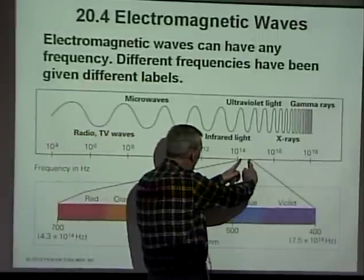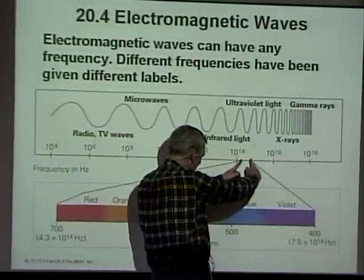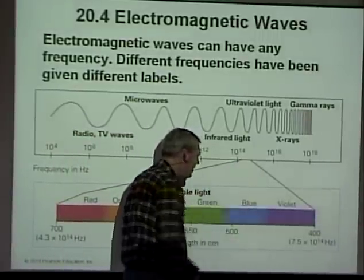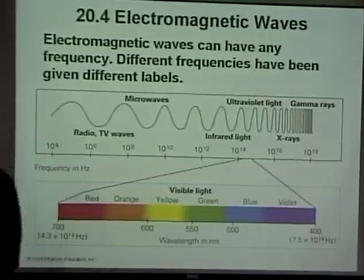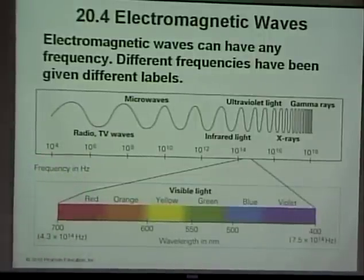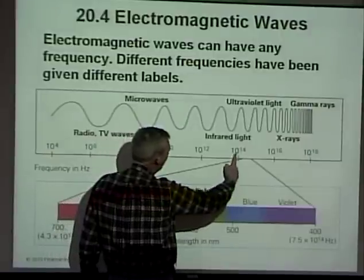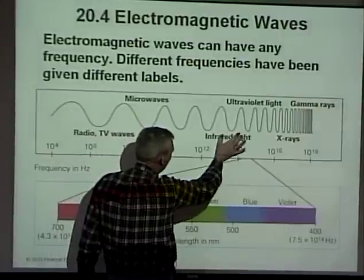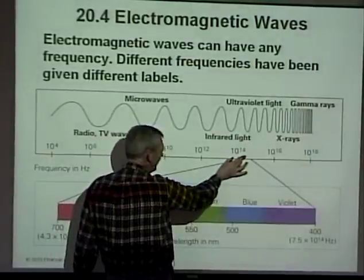As we move up the spectrum, right here in this very, very small band is visible light, at around 10 to the 14th hertz.